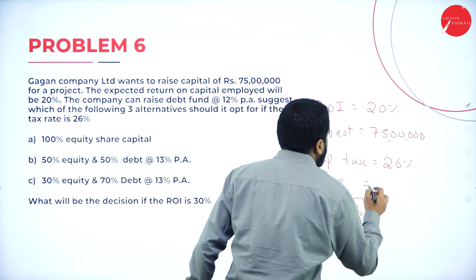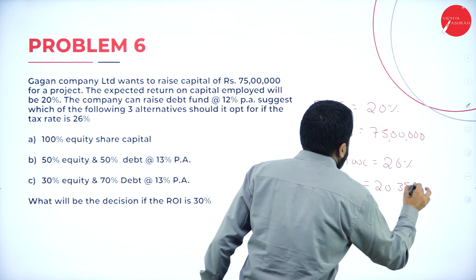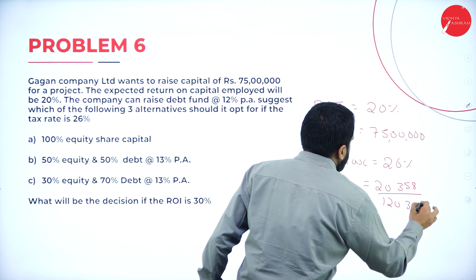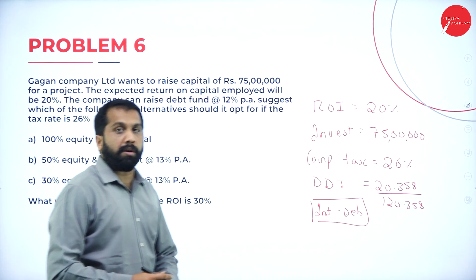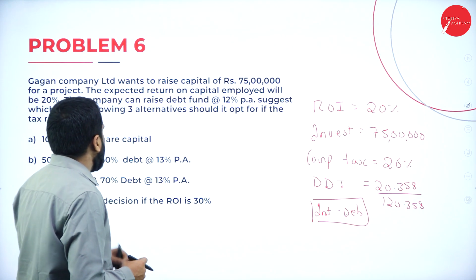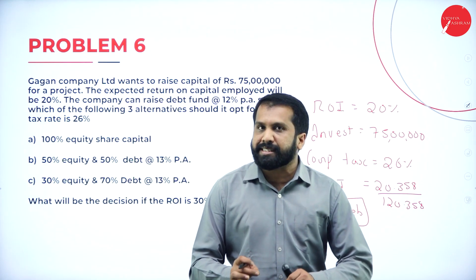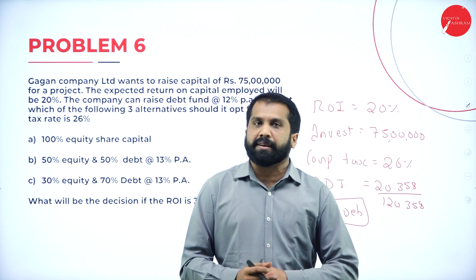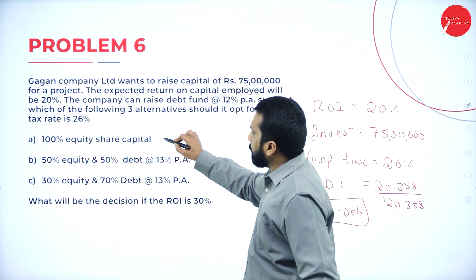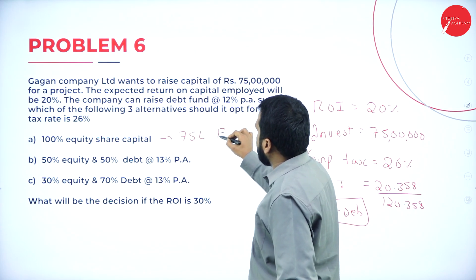Still, we are supposed to remember 20.358 divided by 120.358 — this is your dividend distribution tax. Now, we have three options. The requirement is 75 lakh. Option number one: 100% equity capital, so 75 lakh is equity.